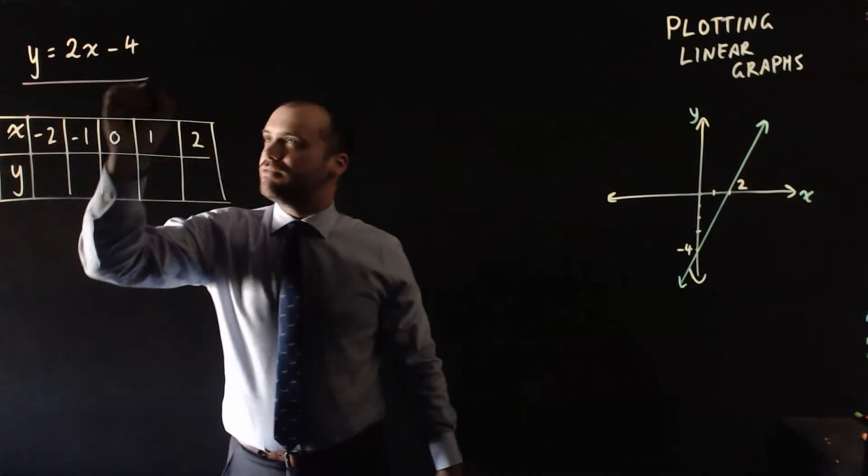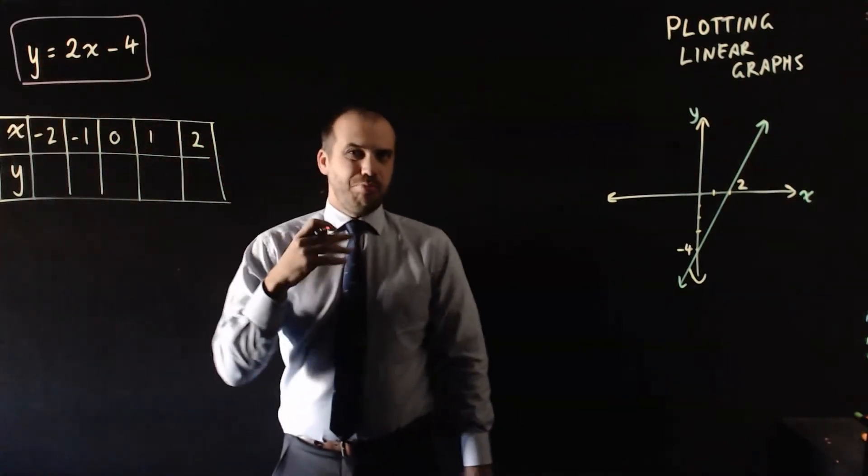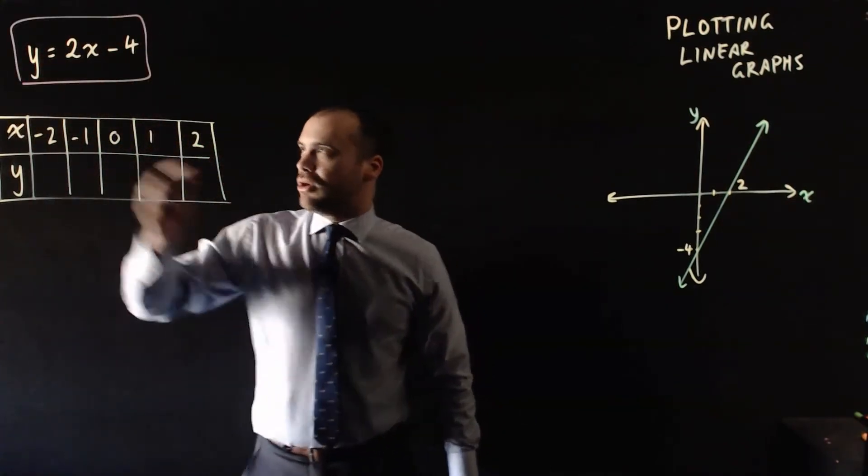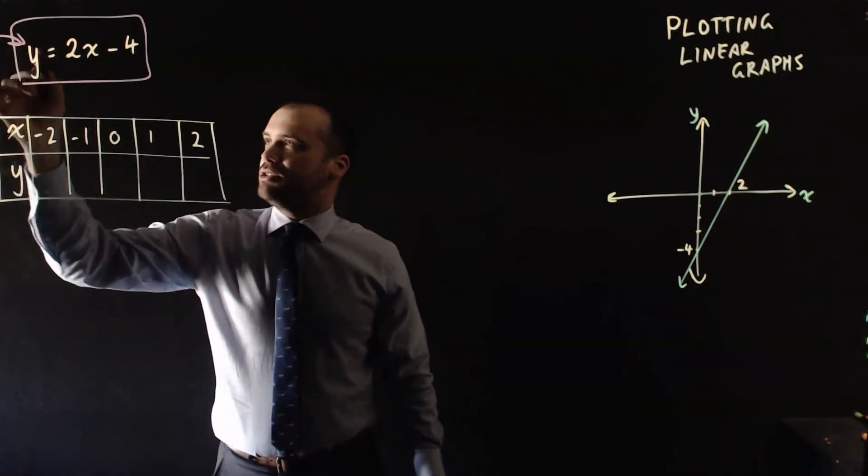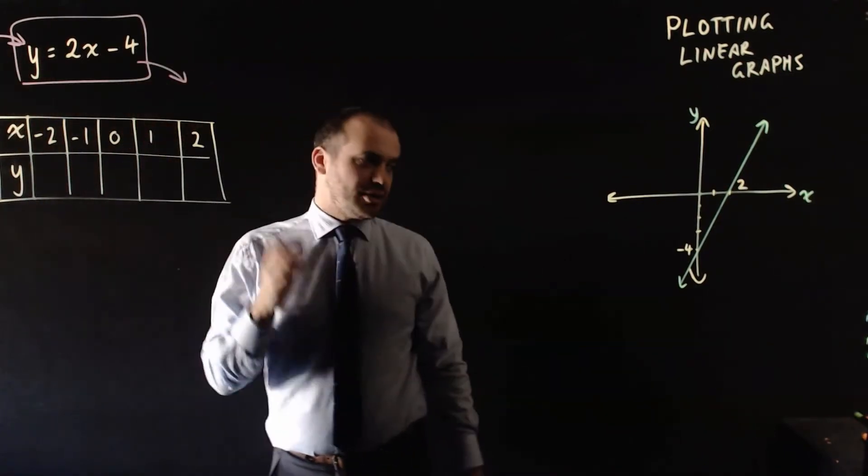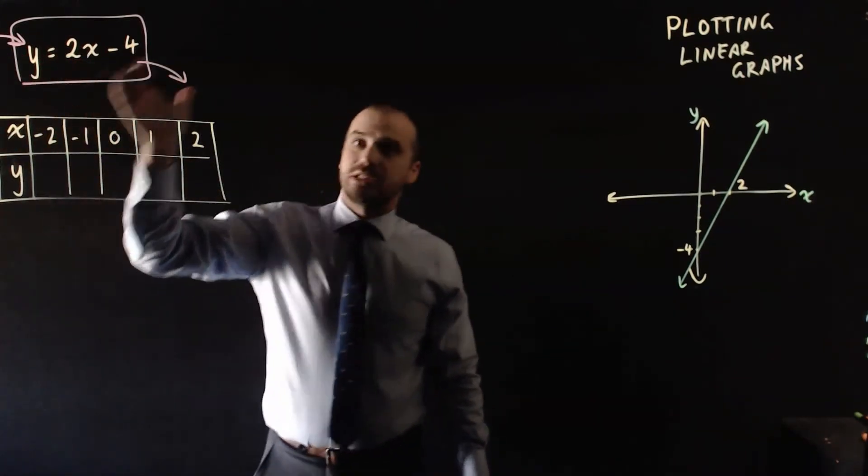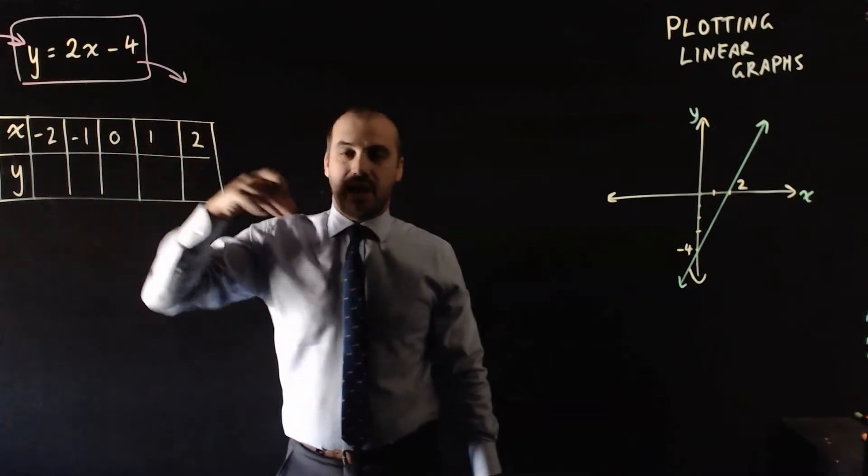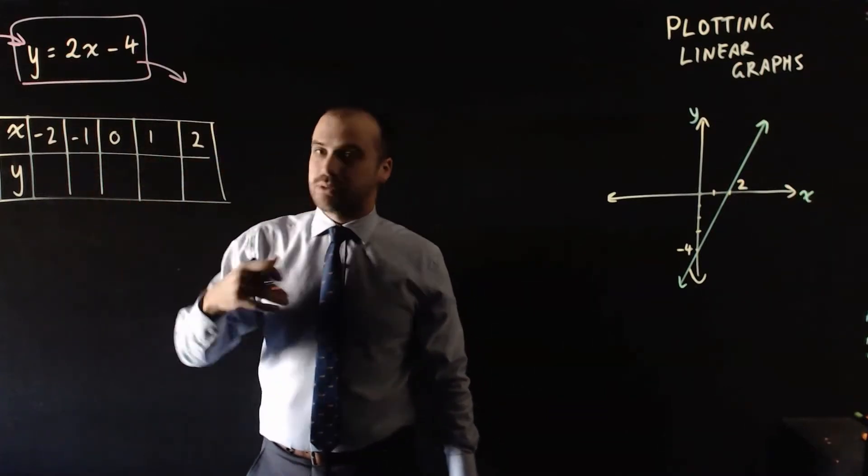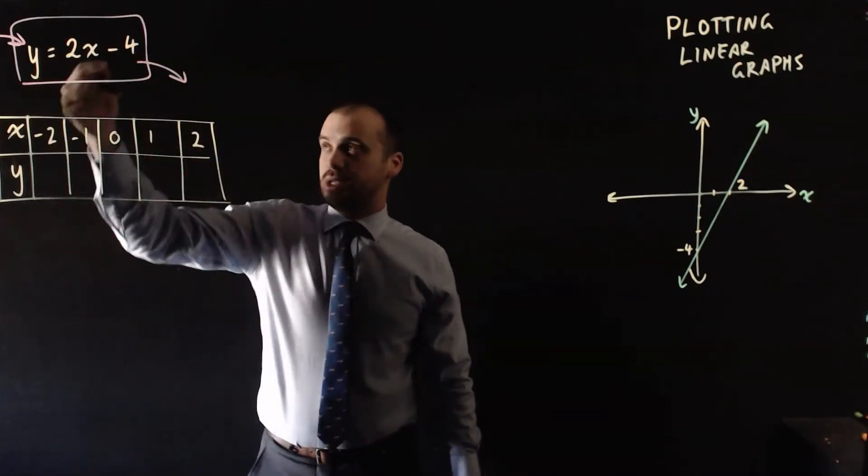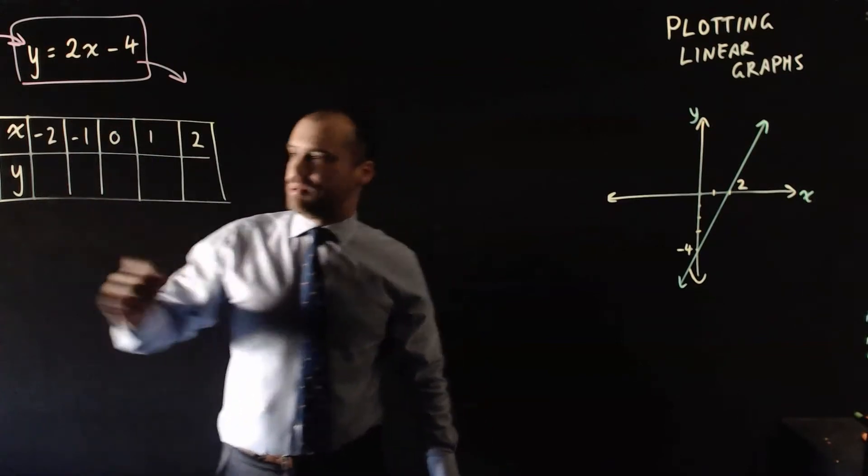Now, I want you to think of this equation as a box, a magic box, that you can put values into and it spits values out. We're going to put x values in and it's going to spit y values out. So let's try to put negative 2 into this box and see what it spits out.